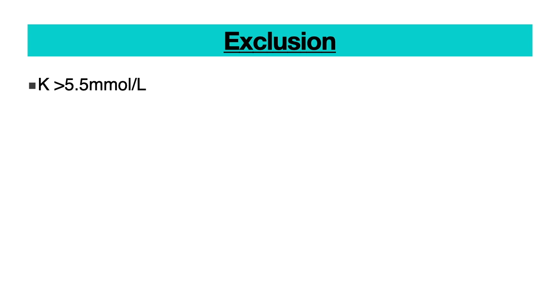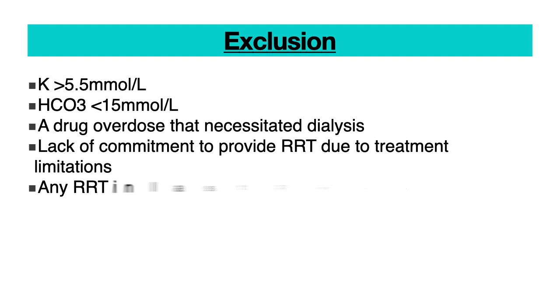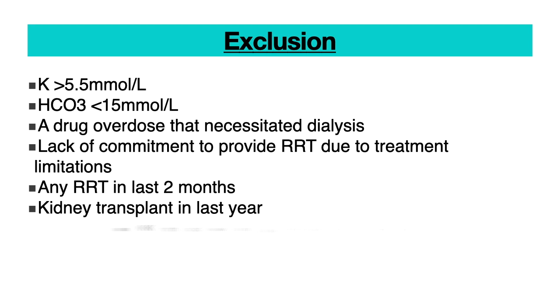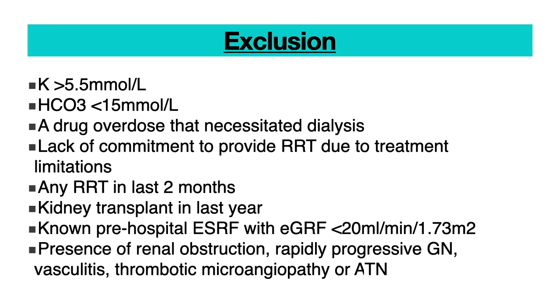The exclusion criteria included potassium more than 5.5, bicarbonate less than 15, an overdose necessitating dialysis, lack of commitment to provide renal replacement therapy due to treatment limitations, any renal replacement therapy in the last two months, a kidney transplant in the last year, known pre-hospital end-stage renal disease with eGFR less than 20, renal obstruction, rapid progressive glomerulonephritis, vasculitis, thrombotic microangiopathy, and acute tubular necrosis.